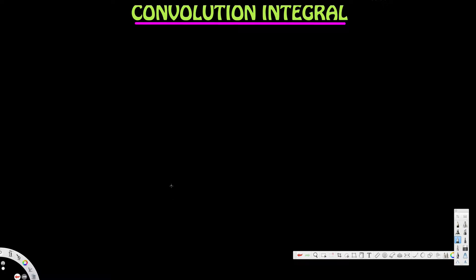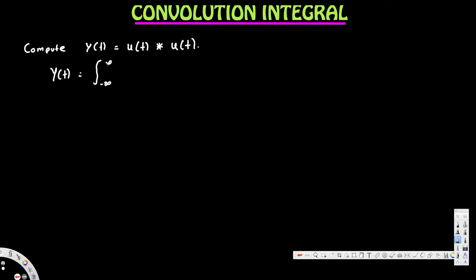In this video we are going to talk about convolution integrals, particularly the situation where g is convolved with g. We want to compute y equal to u convolved with u. In terms of the convolution integral, this is the integration going from negative infinity to infinity of u(τ) times u(t minus τ) dτ. This is the definition of u convolved with u in integral form.